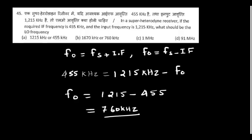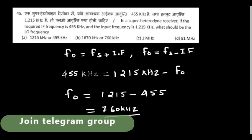Question number 45: In a superheterodyne receiver, if the required IF frequency is 455 kHz and the input frequency is 1,215 kHz, what should be the oscillator frequency? Using the two standard equations, we can find that option B is the right answer.